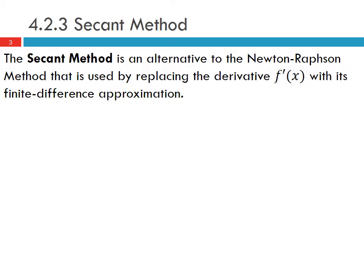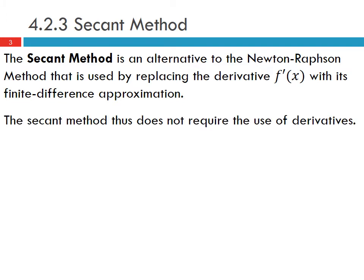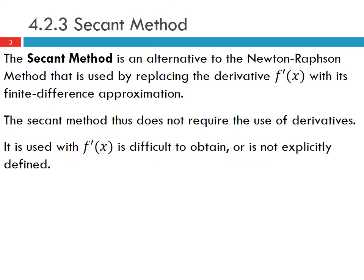The secant method is an alternative to the Newton-Raphson method that is used by replacing the derivative f'(x) with its finite difference approximation. The secant method does not require the use of derivatives, so it can be used when f'(x) is difficult to obtain or is not explicitly defined.